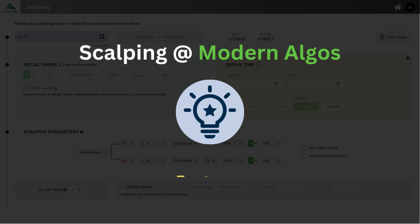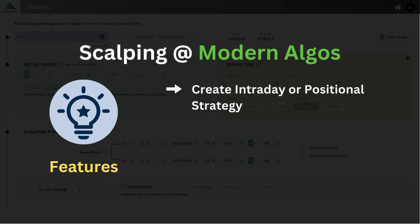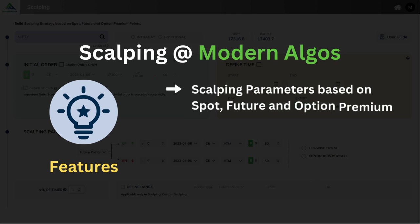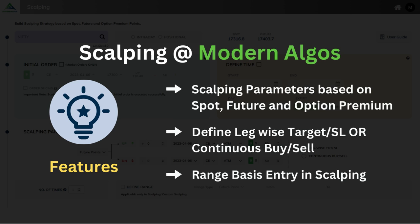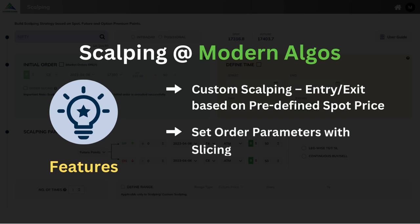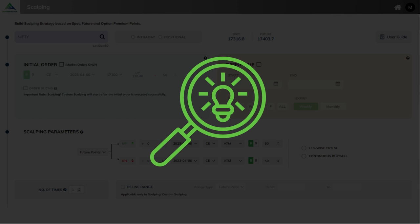Let's take a look at the various features of scalping at Modern Algo's: create intraday or positional strategy, place initial order with order slicing, create time-based strategy, set scalping parameters based on spot, future and option premium, define leg-wise target or stop-loss or continuous buy or sell, range-based entry and scalping, custom scalping, entry or exit based on pre-defined spot price, set order parameters with slicing, define overall target or stop-loss with trailing logic. Now let's explore each of them in detail.